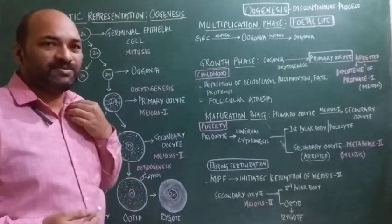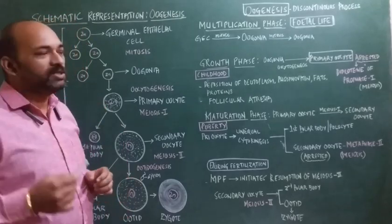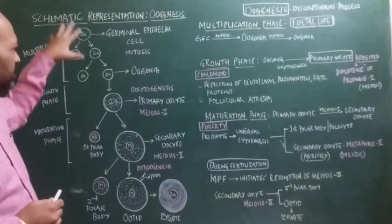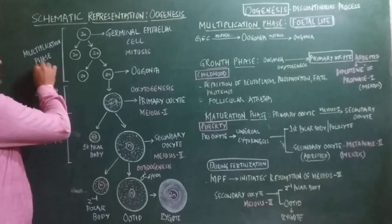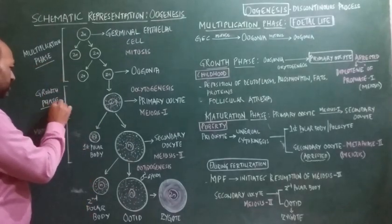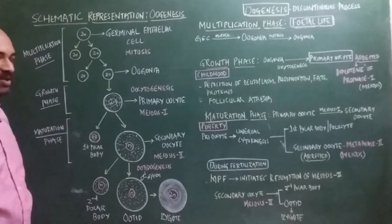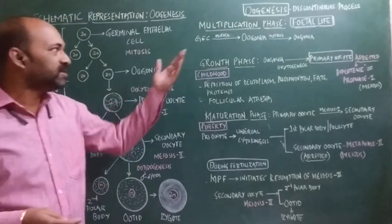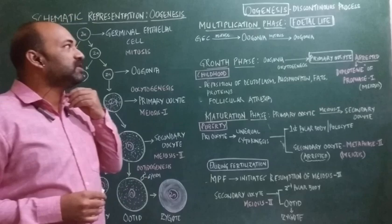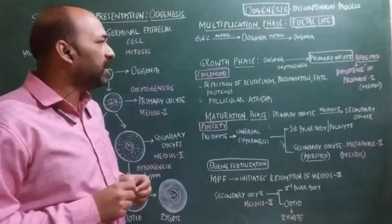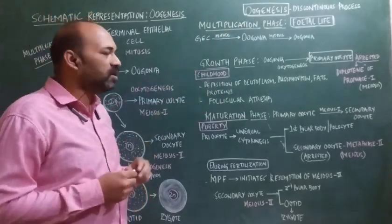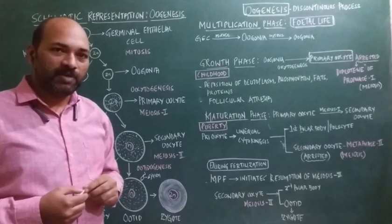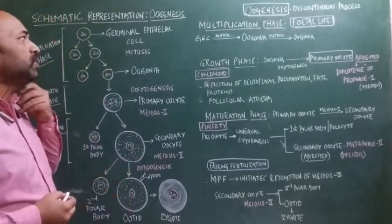Oogenesis mainly consists of three phases, as you can see in both the descriptive part and the schematic part. The first phase is called the multiplication phase, the second phase is called the growth phase, and the third one is called the maturation phase. The multiplication phase occurs during fetal life, the growth phase occurs in childhood, and the maturation phase occurs once the female attains puberty.